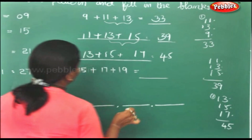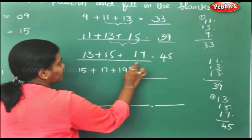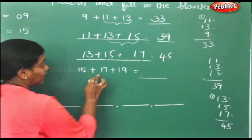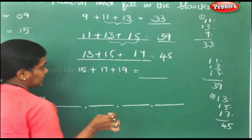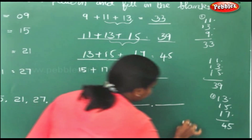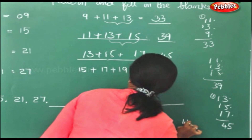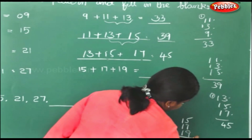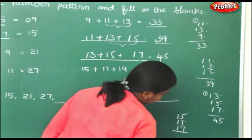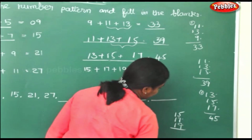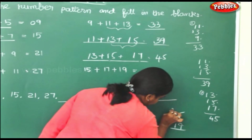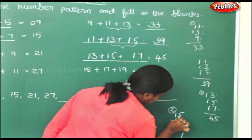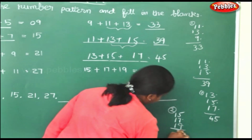Next, what will we do? Take these two numbers: 15 add 17. What's the next odd number after 17? It is 19. Now we will sum this up: 15, 17, 19. You get 51.